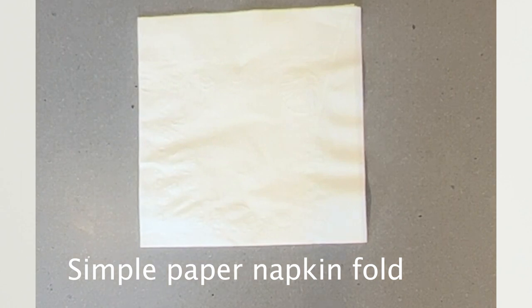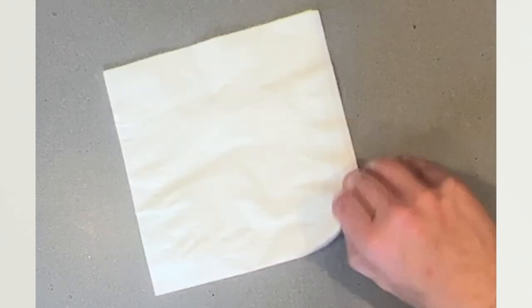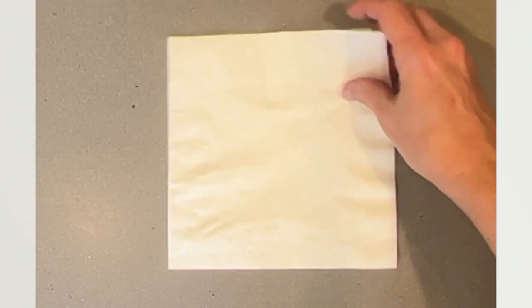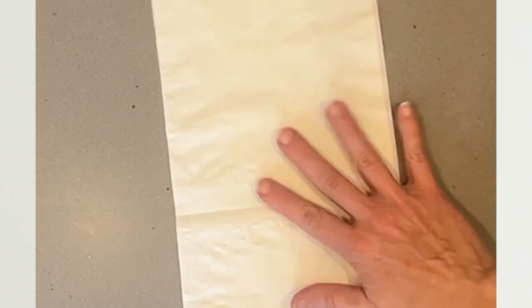Now I'm going to show you a simple way to fold a paper napkin because some of you are doing cookouts and you want to put the silverware with the napkin and make it look a little bit nicer. This is still very easy. This is just a regular paper napkin.